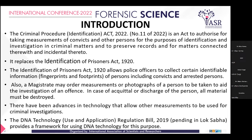There is an act before the Criminal Procedure Identification Act known as the Prisoner Act, which came in 1920, and the 2022 Act replaces the Identification of Prisoner Act 1920. The Identification of Prisoner Act 1920 allowed police officers to collect certain identifiable information like fingerprint and footprint of persons, including convicted and arrested persons.